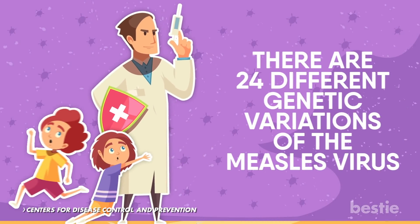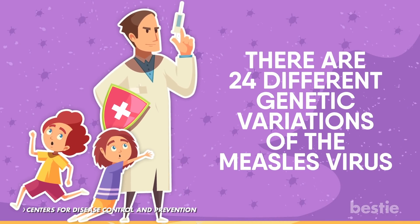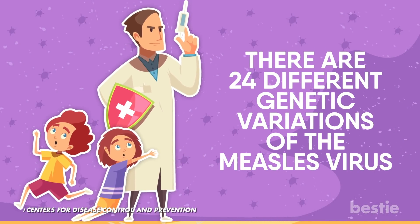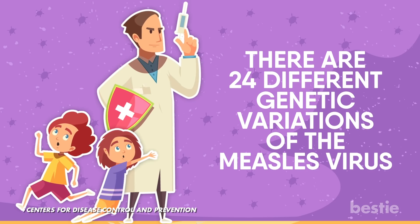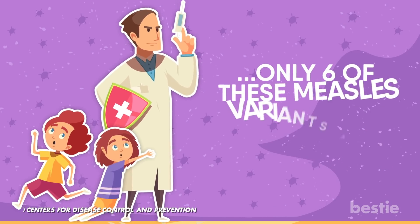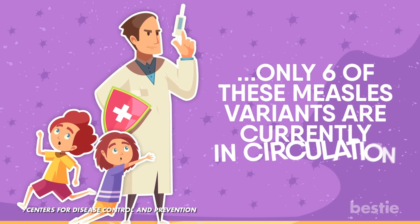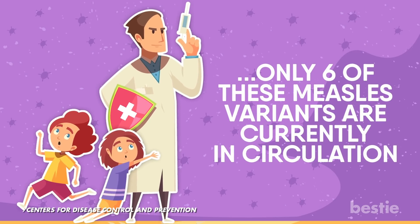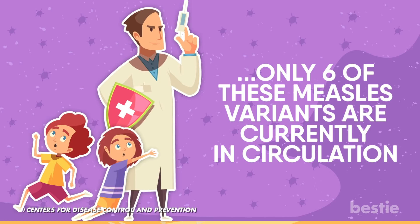There are 24 different genetic variations of the measles virus, although at this time of writing, only 6 of these measles variants are currently in circulation.